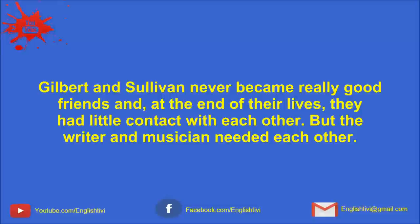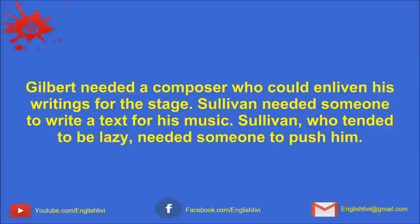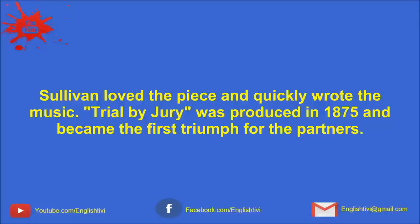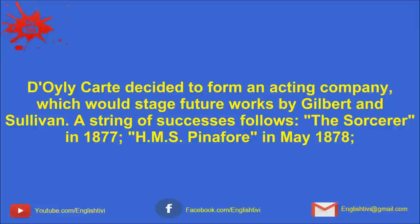Gilbert and Sullivan never became really good friends, and at the end of their lives, they had little contact with each other. But the writer and musician needed each other. Gilbert needed a composer who could enliven his writings for the stage. Sullivan needed someone to write a text for his music. Sullivan, who tended to be lazy, needed someone to push him. A theatrical manager named Richard Doily-Cartt arranged their first collaboration. Gilbert visited Sullivan and read him his satire on the legal system, Trial by Jury. Sullivan loved the piece and quickly wrote the music. Trial by Jury was produced in 1875 and became the first triumph for the partners.